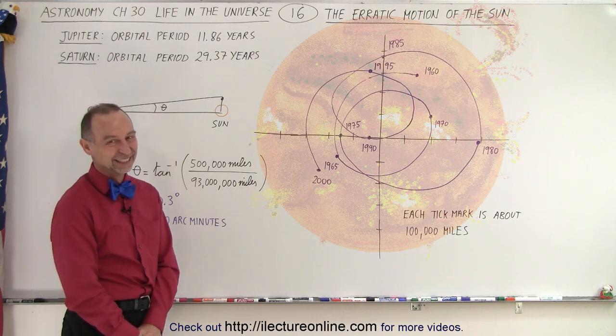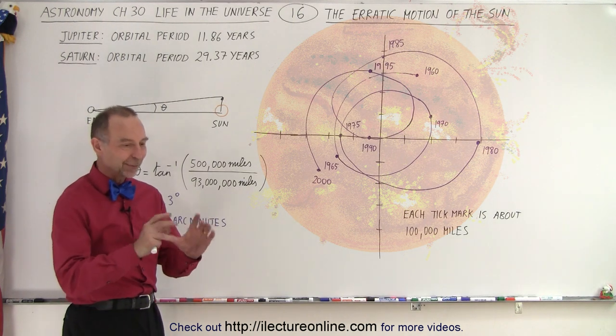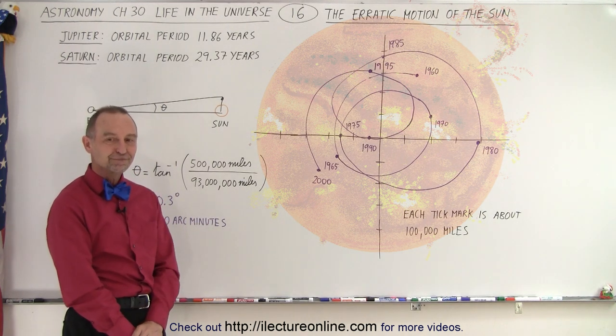Student: So if there was no planet, the sun would be in the middle? Instructor: If there was no planet, the sun would be in the middle and stay in the middle and not move. That's right.